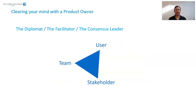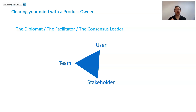The product owner is the key diplomat, the facilitator, the consensus leader. It's important to be a leader by consensus, because you need to make sure the team, the users and the stakeholders are all buying into your vision and what it is you're doing. You need to be listening to them very closely to make sure your proposals get that buy-in.